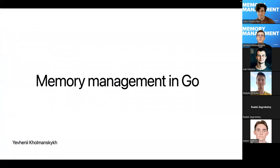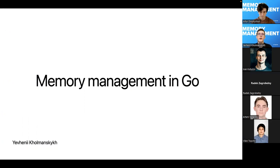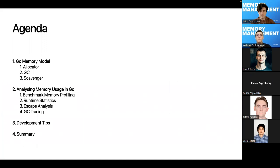Today we are talking about how Go works with memory, starting from the allocation process and ending with some analysis and development tips. I chose this topic because working with memory is the core part of the Go runtime, which may affect the operation and performance of an application. Today we will discover how memory allocation and deallocation works, how we can analyze heap growth, and what actions we can take to avoid problems with memory allocation in Go applications.